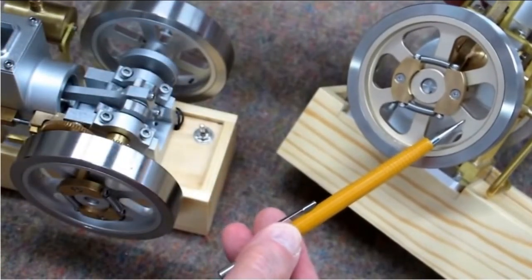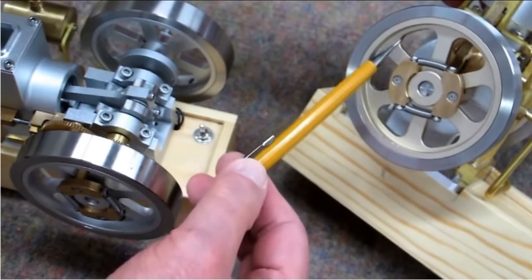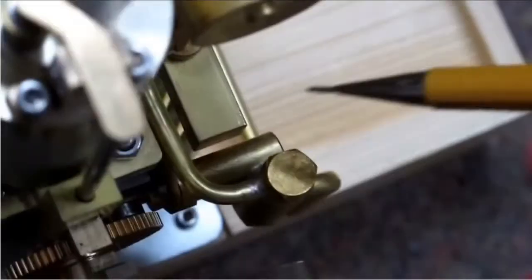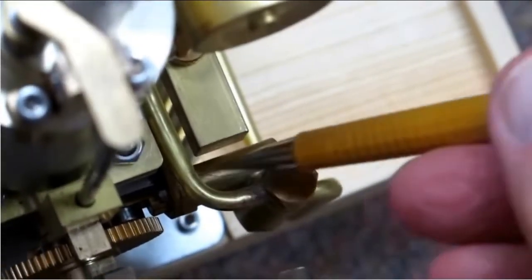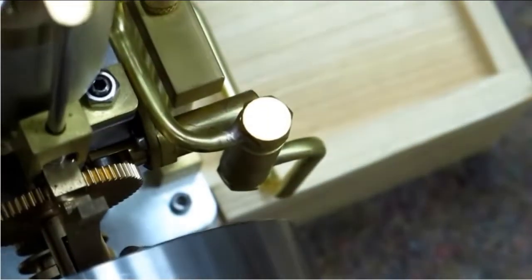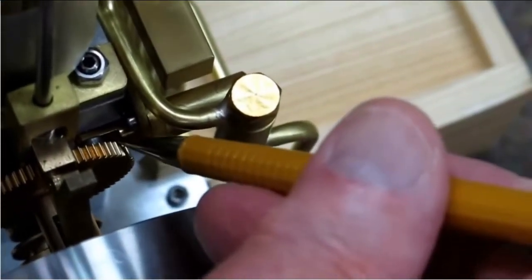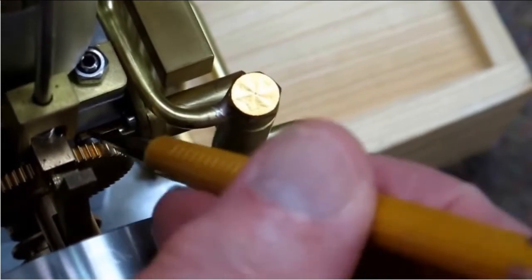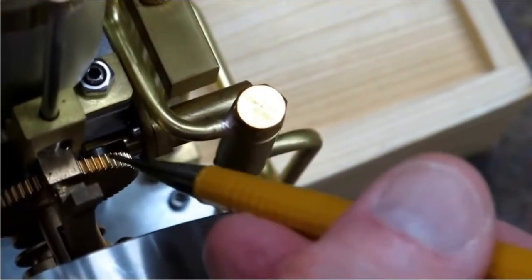The same vented cap is used over here on the top of the crankcase. The center section of the flywheel has this copper-colored anodizing. The water pump is this section right here.